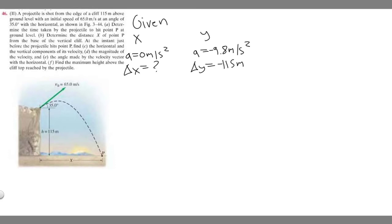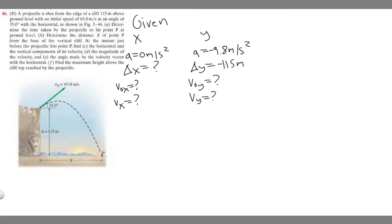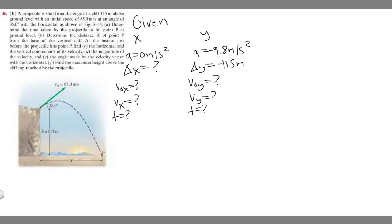The initial velocity in the X direction we don't know yet but can solve for. Same for the Y direction. We also don't know the final velocities in X and Y, and time T is unknown in both directions. Make sure to write this down because I'll need to erase multiple times throughout this problem.